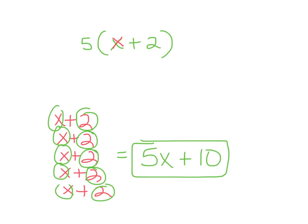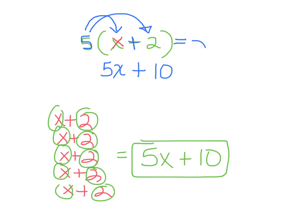Now let's do it using the distributive property. I take this 5 and multiply it by everything inside. I draw a little arrow to show this. So 5 times x, which I write as 5x. Keep the plus symbol. Then 5 times 2, which is 10. So I just simplified this expression to 5x plus 10 using the distributive property. This simplified form is an equivalent way to write the original expression.